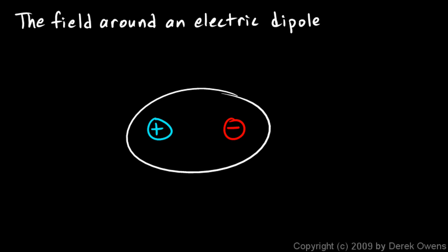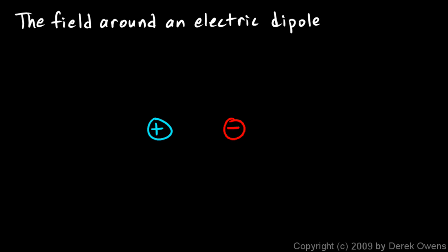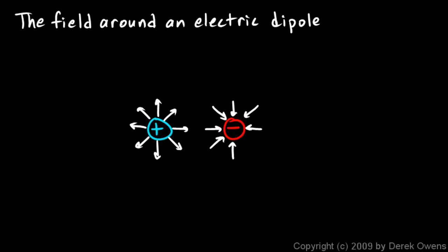We can ask what the electric field looks like around an electric dipole. Let's draw some field lines. We'll draw the field lines coming outward from the positive charge and inward toward the negative charge. Near the negative charge, the electrical forces will be dominated by the negative charge. Near the positive charge, the electrical forces are dominated by the positive charge.